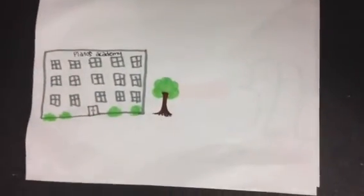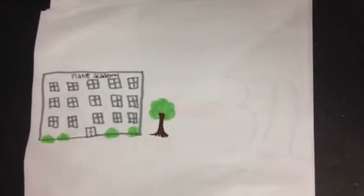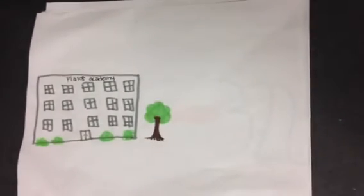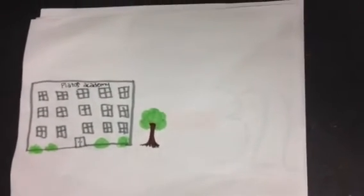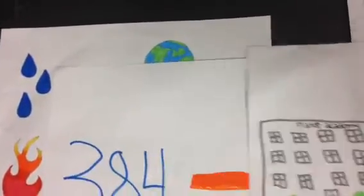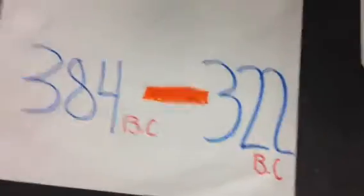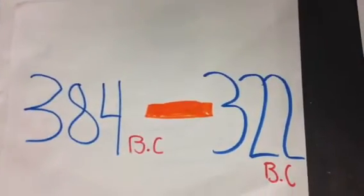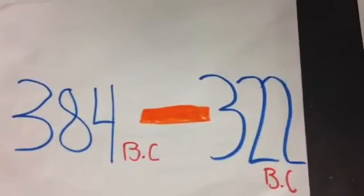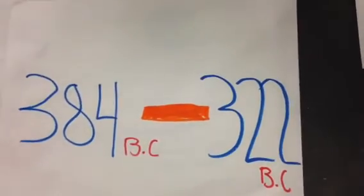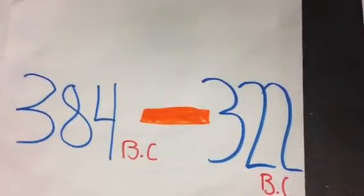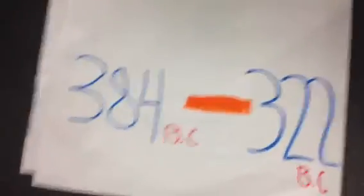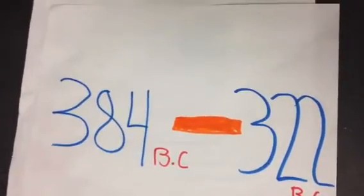Where did Aristotle learn this? He learned this in the Plekhtos Academy in ancient Greece. Between 384 BC and 322 BC, Aristotle studied basically his whole life and died around 322 BC.